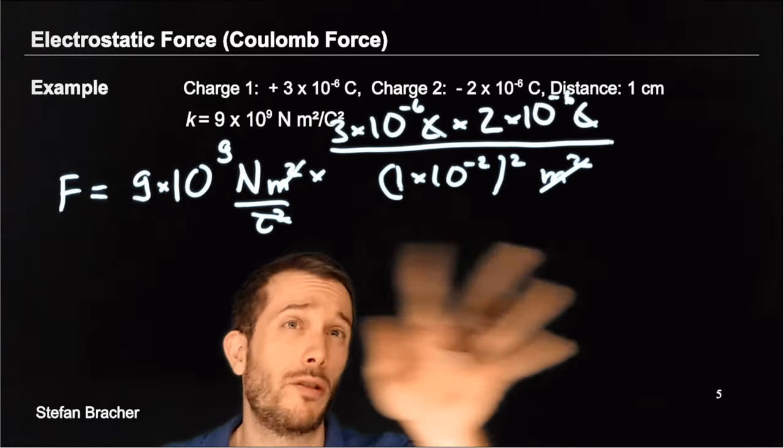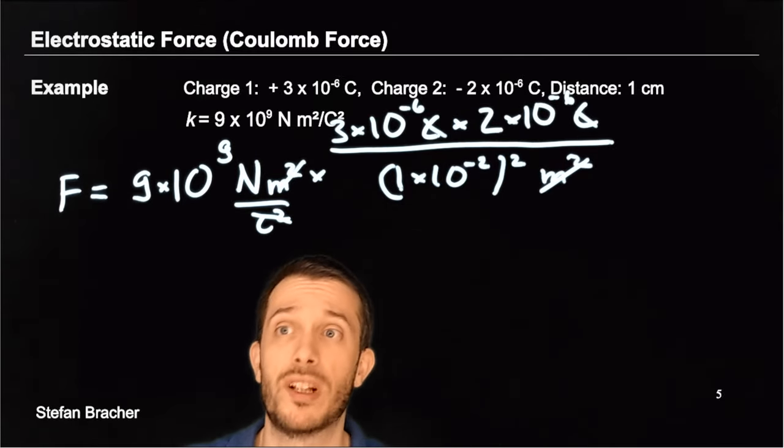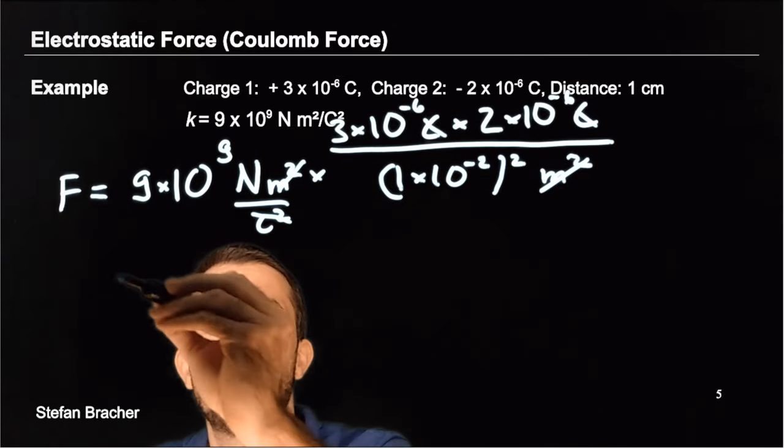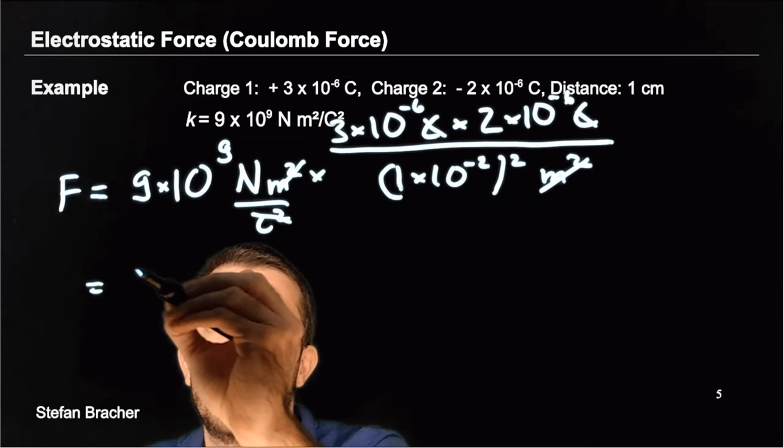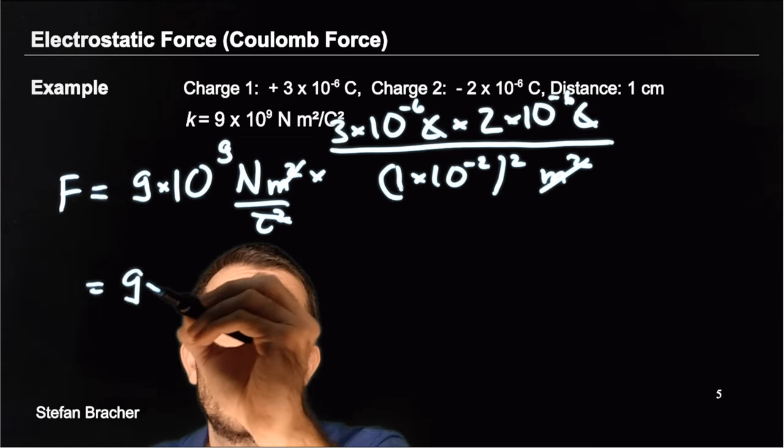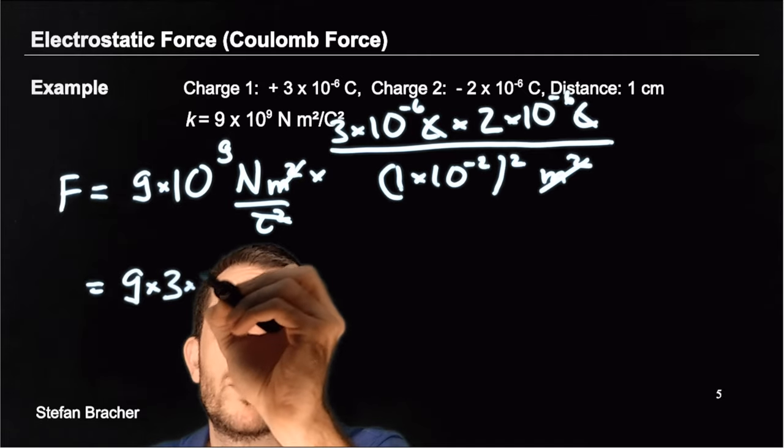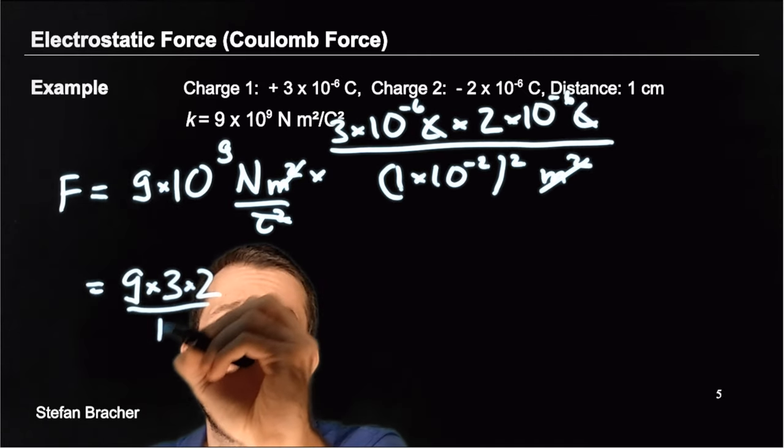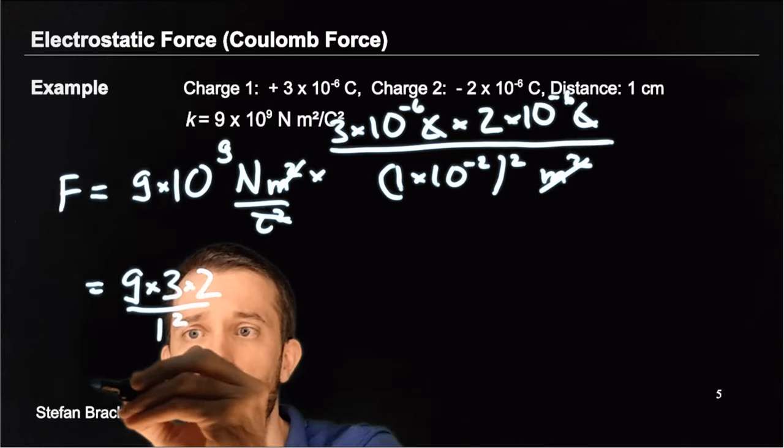Now if I type this in my calculator, I know I'm going to mess up the powers of 10, so I like to do this separately. So for my calculator, I'm going to just take the numbers, 9 times 3 times 2 over 1 squared. Actually I don't even need a calculator, that's 54, right?